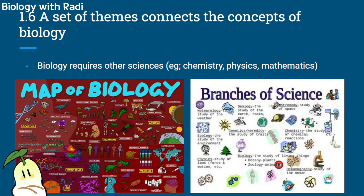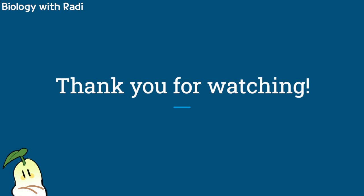Finally, a set of themes connects the concepts of biology. Biology requires many other sciences, including chemistry, physics, and mathematics. Chemistry and mathematics go hand in hand, and chemistry is covered more deeply in Chapter 2 of the textbook. That's it — thank you for watching, and I hope this video helped review Chapter 1.